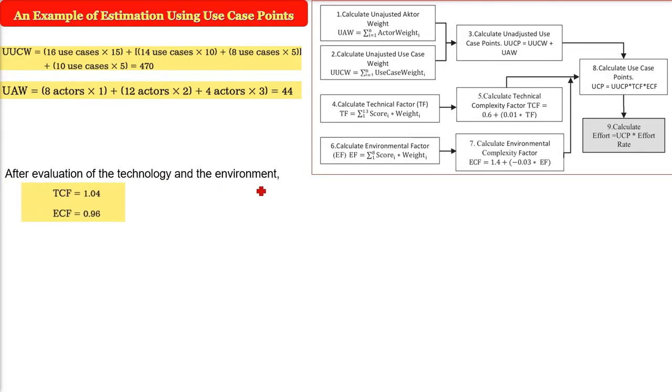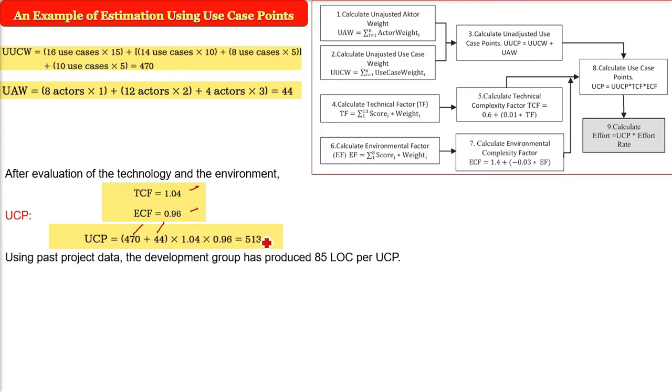Now after evaluation of technology and environment we have just seen we have got the TCF and ECF and now we are ready for the final expression. 470, 44, 1.04 and 0.96. 513 will come. Now 513 is our final value. The use case points. Now what is the significance of this 513? What to do with this 513? This is all the flow chart I have shown. For example, using the past project data the development group has produced 85 line of code per UCP. That is for one UCP. Each UCP there will be 85 line of codes will be written.